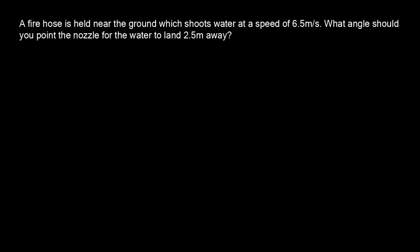Okay guys, welcome back. So this is a 2D kinematics problem — the next example we have. Basically, you are holding a fire hose near the ground and pointing it at an angle so that the water that comes out makes a little arc, lands two and a half meters away from where you're holding the nozzle. You need to figure out what angle is required. You're given the distance the water needs to travel and also the speed of the water as it comes out of the nozzle.